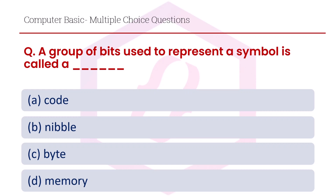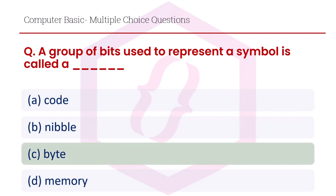A group of bits used to represent a symbol is called: option A code, option B nibble, option C byte, option D memory. The right answer is option C, byte.